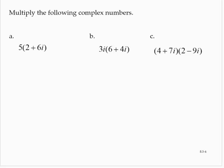Multiply the following complex numbers. When we multiply complex numbers, we basically treat them like polynomials, except in the end, the end result must be in standard form.